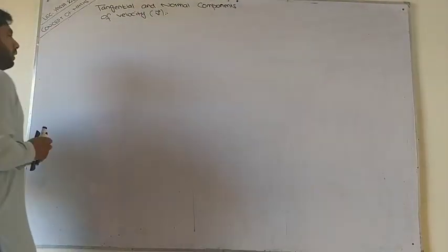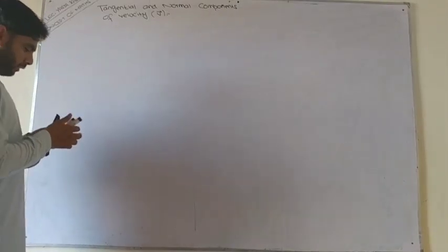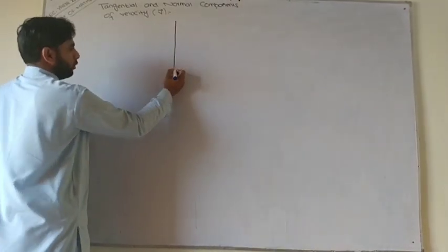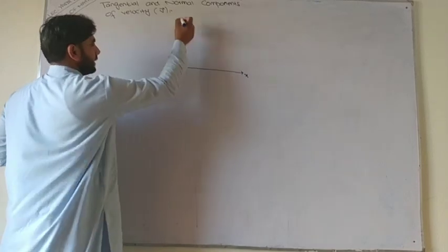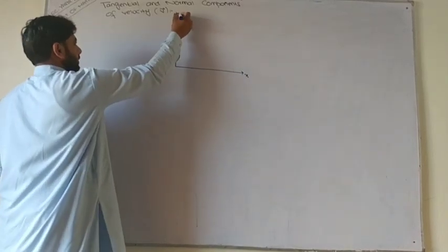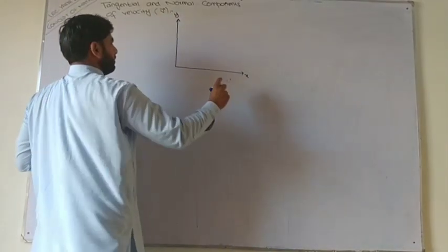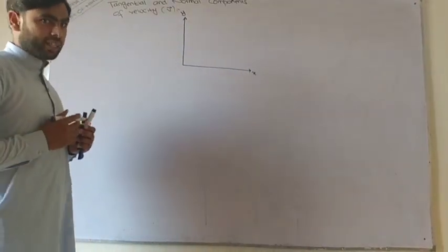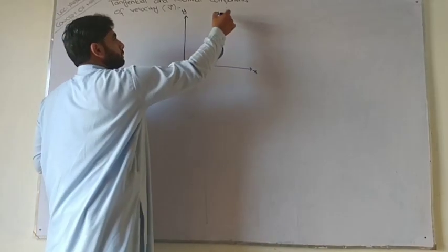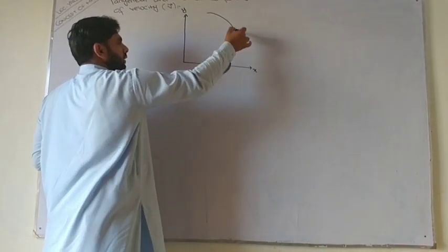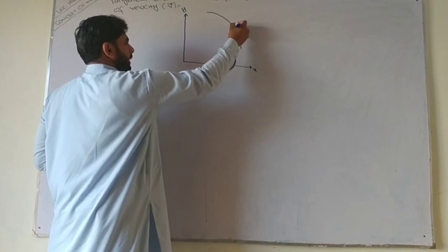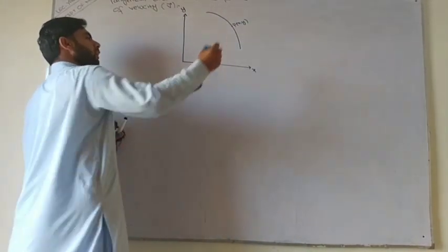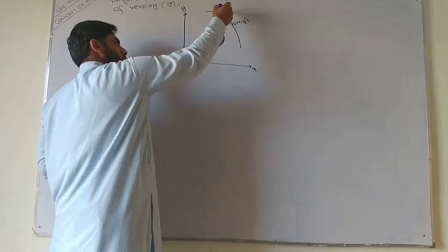So we start our work with this diagram. Let we have an xy coordinate plane, this x axis, this is y axis. We have a curve that we drew in the previous lecture of Cartesian component of velocity and acceleration. Let we have a point P of xy.